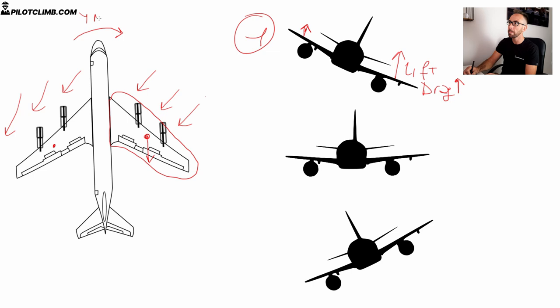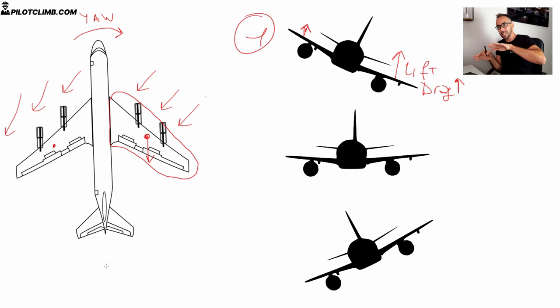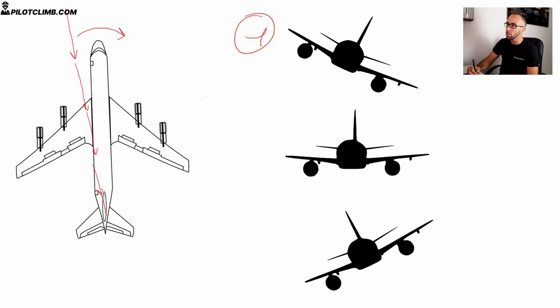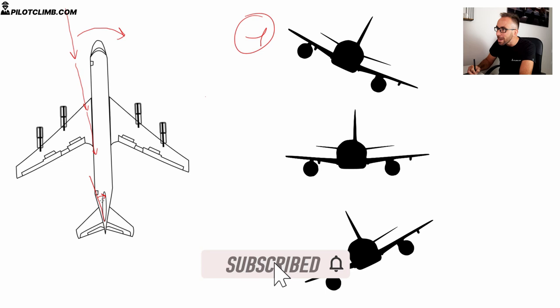The aircraft is banking to the right, going into this sideslip and producing this yaw to the right. Now, with this yaw to the right, what will happen to the relative airflow? Because you are yawing to the right, the relative airflow will come in at an angle and hit your rudder, giving it an angle of attack. You have to look at the rudder like a wing — if you produce an angle of attack with the relative airflow because you yaw to the right, this rudder will create lift.